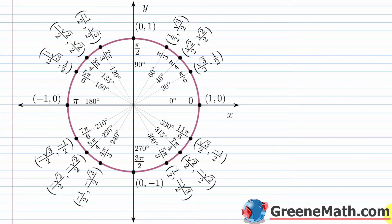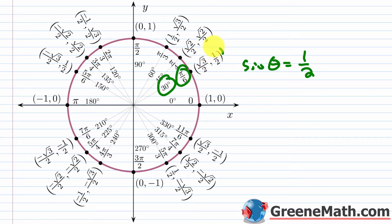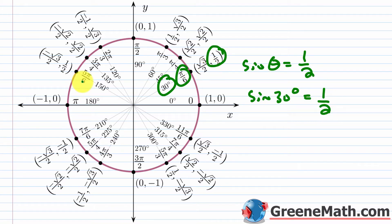First, let's think about the unit circle approach. If you can find the value from the unit circle, go to it. Looking for sine of theta equal to 1/2, we look for the y-coordinate of 1/2. For 30 degrees (or pi over 6 in radians), the y-coordinate is 1/2, so sine of 30 degrees equals 1/2.